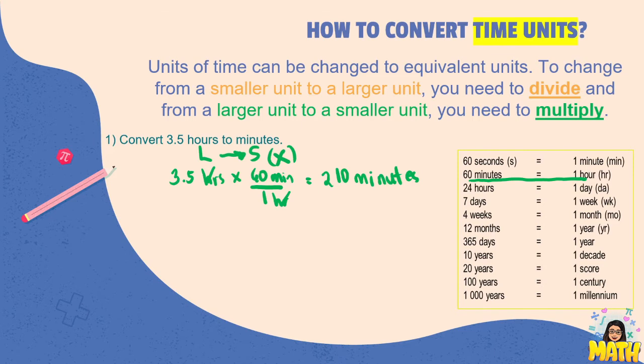That will give us 210, so there are 210 minutes in 3.5 hours. Next, convert 5 weeks to minutes. So we know that weeks is larger or longer than minutes. So this is larger to smaller units, but we do not have a direct conversion from weeks to minutes.